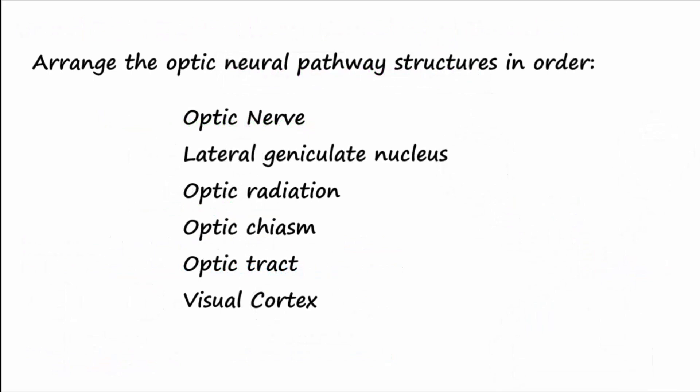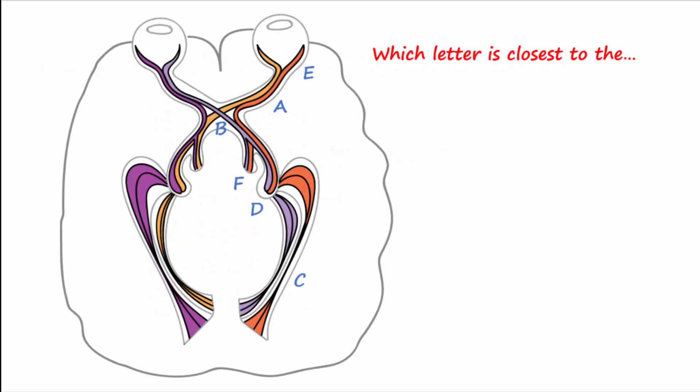To test your knowledge of visual neural pathways, please arrange the following terms in the correct order as visual information travels from visual fields to the visual cortex in the occipital lobe. Pause the video now and determine your answers. If you answered the following order, you are correct.